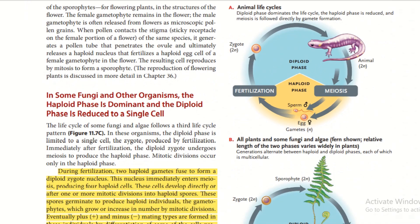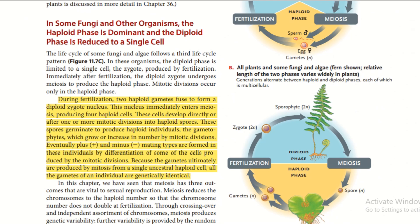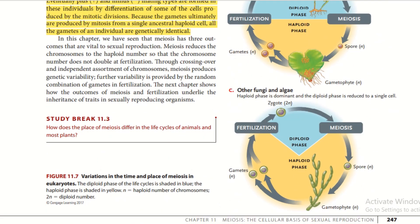Figure A shows the animal life cycle: the diploid phase dominates and meiosis is followed directly by gamete formation. Figure B covers all plants and fungi, such as ferns, where the relative length of the two phases varies widely and generations alternate between haploid and diploid multicellular phases. Figure C shows other fungi and algae, where the haploid phase dominates and the diploid phase is reduced to a single cell. Remember: the gametophyte generation produces gametes or sex cells, and the sporophyte generation produces spores asexually; in terms of chromosomes, gametophytes are haploid and sporophytes are diploid.